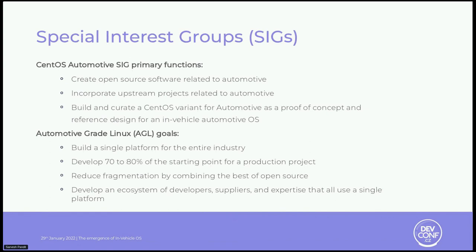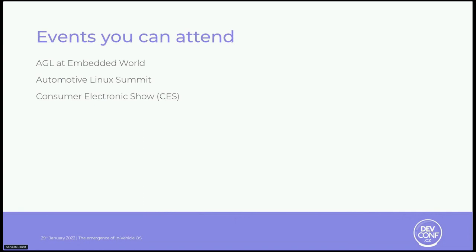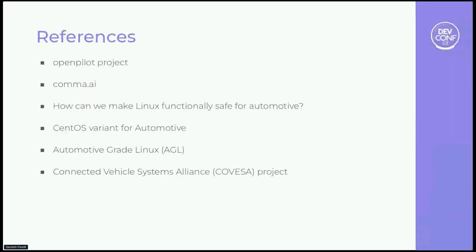Two special interest groups related to in-vehicle OS are the CentOS Automotive SIG and the Automotive Grade Linux SIG. Complete information on these groups and their documentation can be found on their wiki pages. For those who want to attend events related to automotive or open source, you can attend AGL at Embedded Linux, Automotive Linux Summit, and Consumer Electronics Show. Here are a few important links for future reference, and most resources have been hyperlinked in the slides. Thank you for your interest in this session — if anyone has questions, we can discuss.